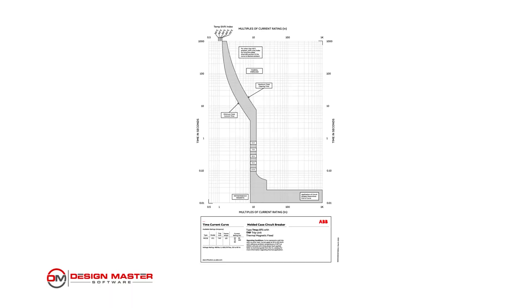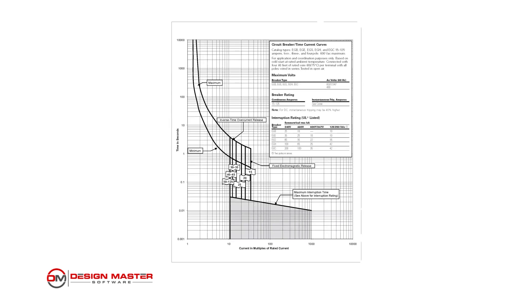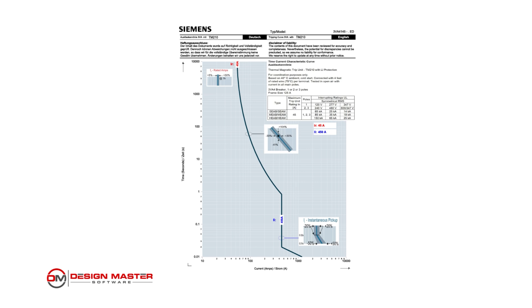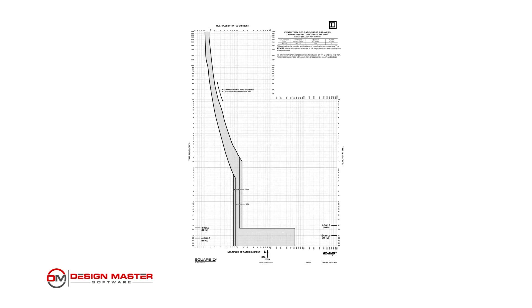Those are the three types of time current curves. Now let's look at some practical considerations when actually using them. First, realize that these curves are being pulled from analog sources — manufacturers publish PDFs with these curves and that's really the only way to get this information. Software developers have to take that PDF and digitize it by manually tracing the curves. You should keep this in mind as you use them for coordination, particularly for thermal curves and fuse curves. You don't want to have incredibly tight coordination on those, as it relies on the precision of tracing that you can't fully rely on.